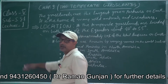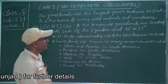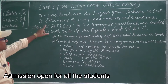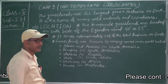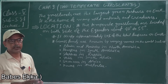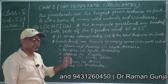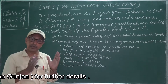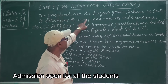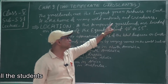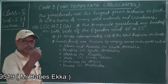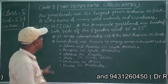Today I deliver lecture number one. Let's start the topic: grasslands are the largest green pasture on earth. Pasture — in Hindi we call it 'charaaga' — where animals are grazed and cattle are fed. So this is called a pasture or charaaga.